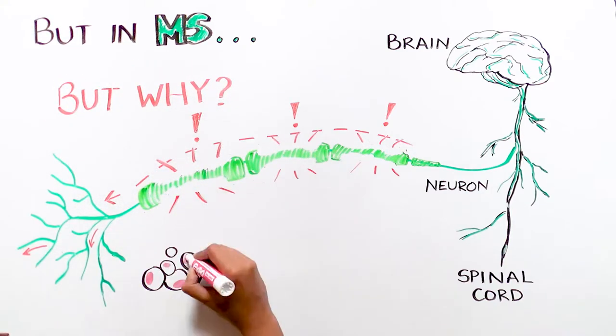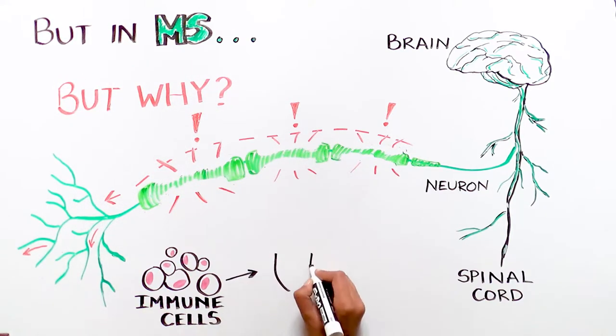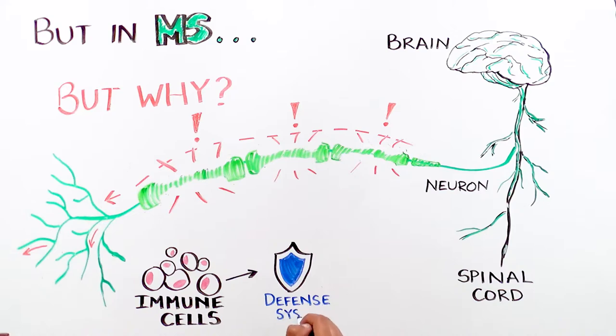It is mainly due to immune cells. The immune system is our body's natural defense system. It keeps us healthy by recognizing and killing foreign invaders that cause disease or infection, such as bacteria or viruses.